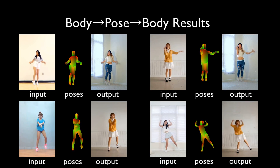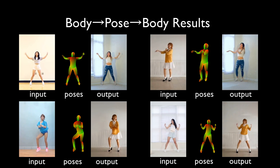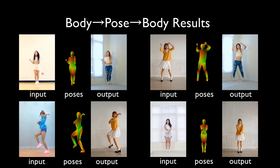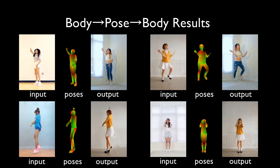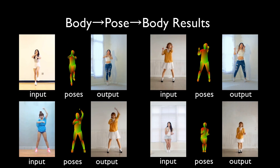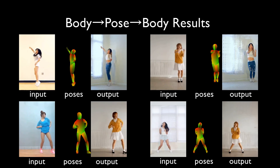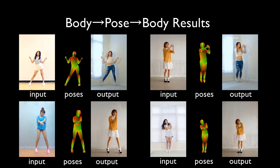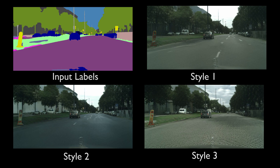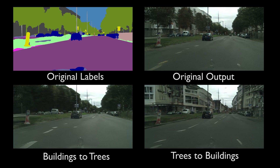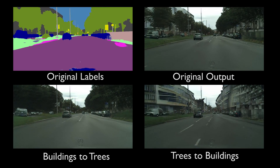Another example: we can synthesize videos of humans moving given pose information. For example, we can generate videos of people dancing. Using estimated poses as an intermediate representation, we can transfer dancing motion from one person to another person. Note that even the shadows are consistent with the subject. Our network can synthesize multiple different results given the same input, or we can manipulate the input to generate a desired output video.